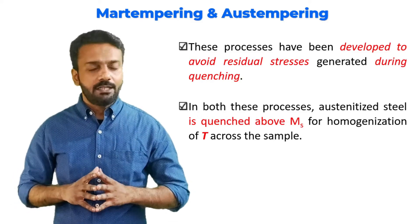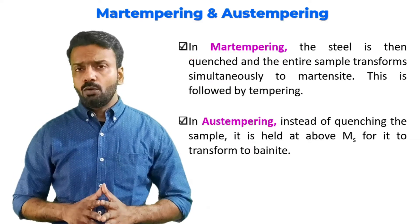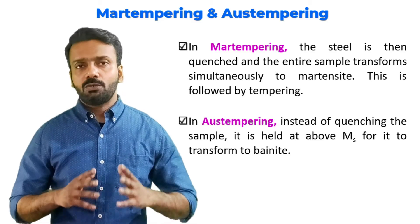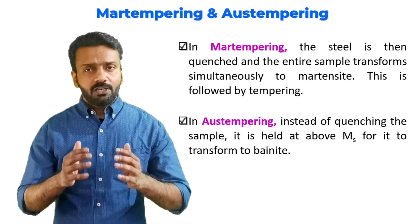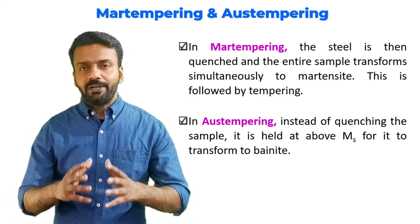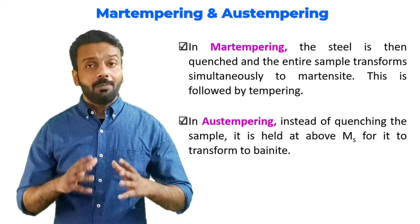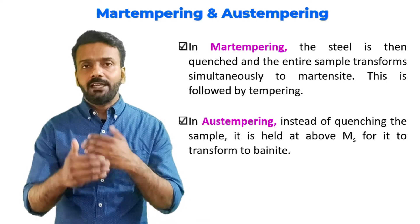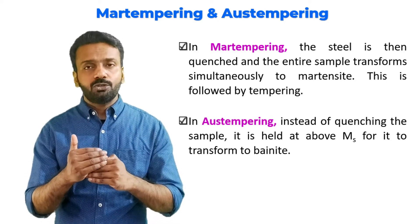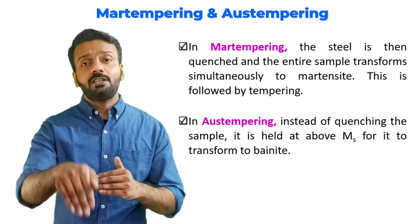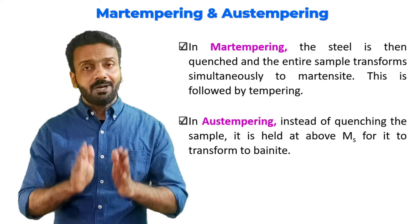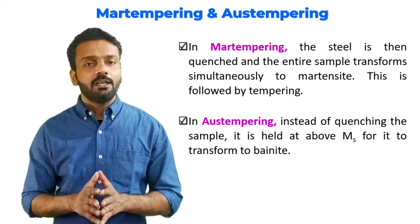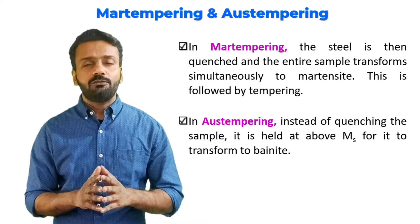To make the material entirely homogeneous, we hold it just above the martensitic start transformation temperature, ensuring the internal and external surfaces reach the same temperature throughout. In martempering, we cool the material rapidly to just above Ms, hold it there until the entire material is homogeneous, then cool it to form martensite, followed by a tempering heat treatment.